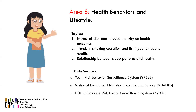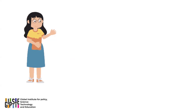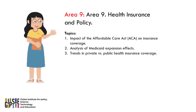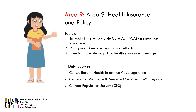Area 9: Health Insurance and Policy. Here are three topics for health insurance and policy to be considered: 1. Impact of the Affordable Care Act (ACA) on insurance coverage. 2. Analysis of Medicaid expansion effects. 3. Trends in private versus public health insurance coverage.